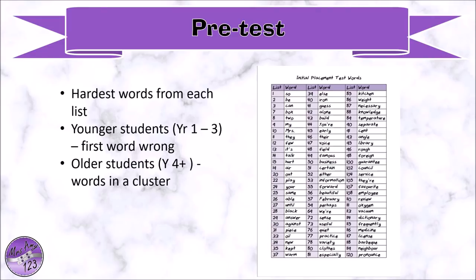How I do the pre-test: I take the hardest word from every single list and test the kids on it — either on paper or in an exercise book with clipboards between them. I read out words one at a time and as they start making mistakes I close up their books. For younger students in years one to three, I take their first mistake as the starting list — so if they misspelled 'my' on list nine, that's where they start. With older students like year fours, I look for clusters of mistakes rather than the first error, because they might get one wrong early but not again until much later. I start them where they're making roughly every second or third word wrong.